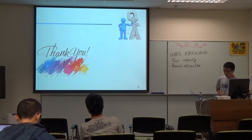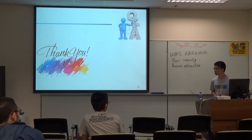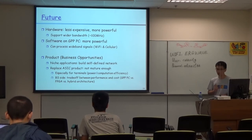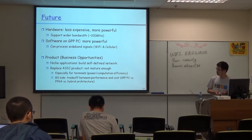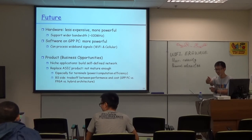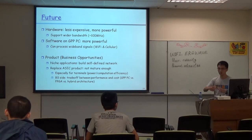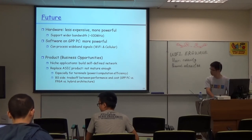Question from audience: do you have examples of niche applications like self-defined networks? Speaker: People are using FPGA to build networks. They use that to build a small-sized core network because they cannot afford to build a full chipset.